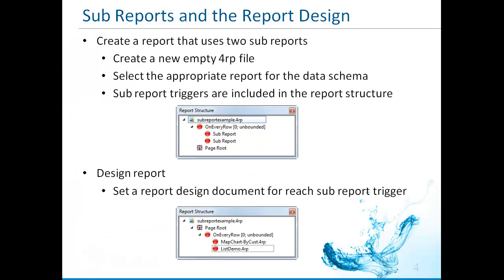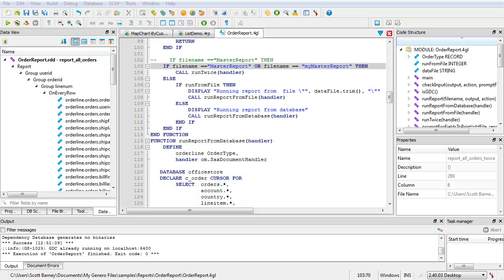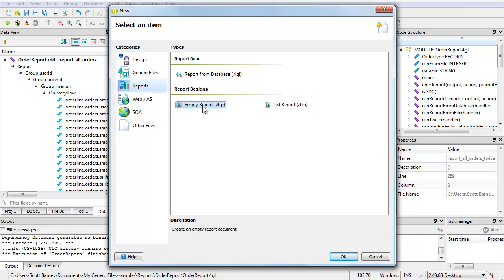The next step involves creating the report design for the master report. Start with an empty report. When you specify the data schema — the part of the RDD that maps to the master report — sub-reports appear as nodes in the data view, and sub-reports appear as triggers in the report structure. Place your on every row trigger under the page root; the sub-report triggers remain under the on every row trigger. Specify a report for each of the sub-report triggers. Continue with the simple demo and create a new, empty report.